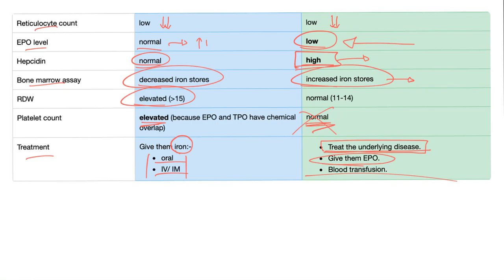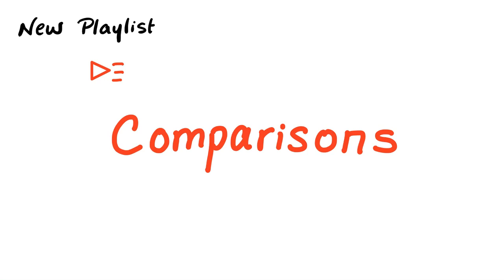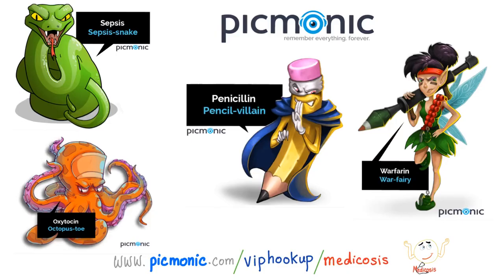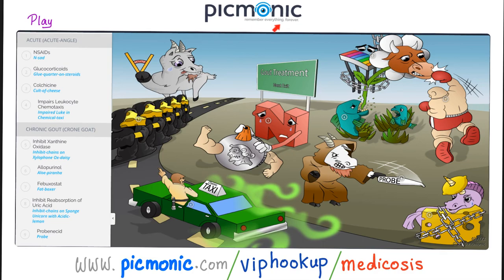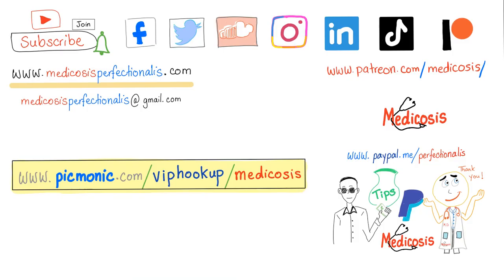There is a new playlist on my channel called Comparisons, covering topics like pseudogout versus gout, hookworm versus tapeworm, and folate deficiency versus B12 deficiency. If you love mnemonics, check out Picmonic — it's a visual mnemonic platform for students. Thank you so much for watching. Be safe, stay happy, and study hard.